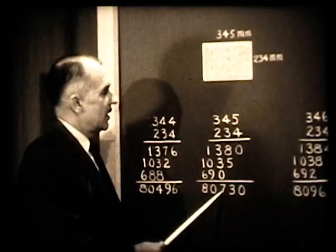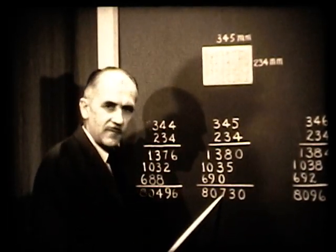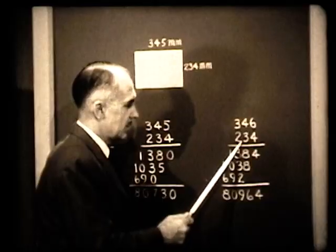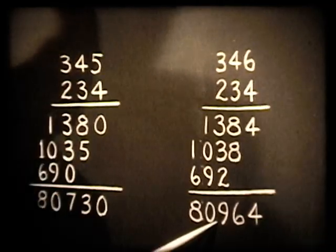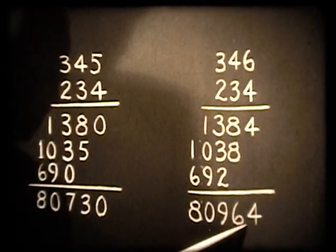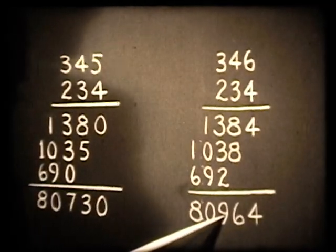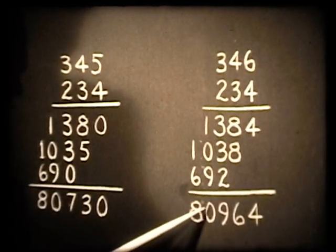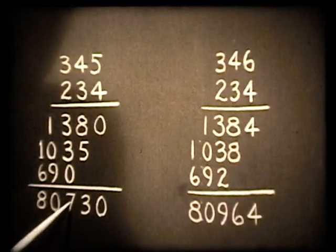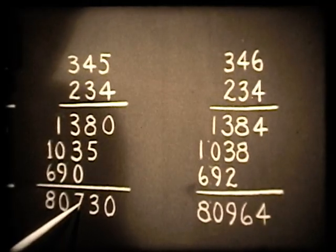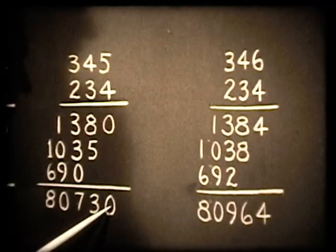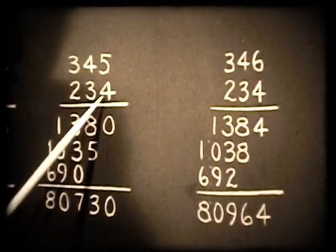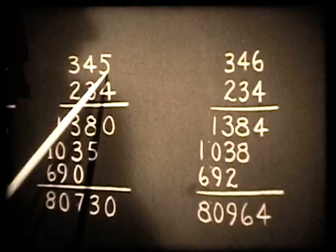Suppose we had read 346 instead of 345 — a millimeter too long. Then we would multiply 346 times 234 and get 80,964. Again, the third figure is off by about two numbers: 807 versus 809. So again, our answer is only nearly correct to the third significant figure. The last numbers are not important — one could just as well write 80,700, because we only know these numbers to within one in the third significant figure.